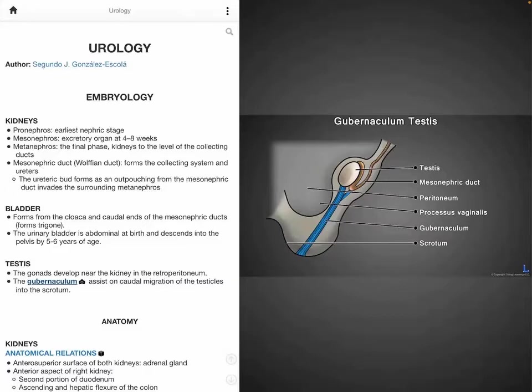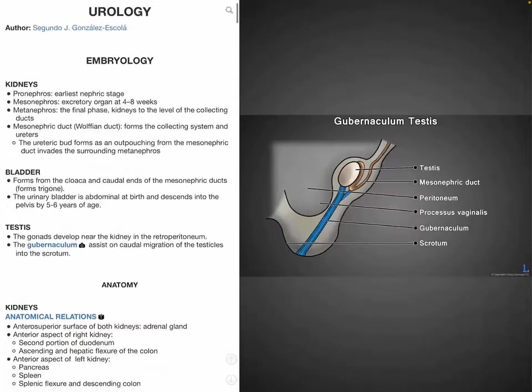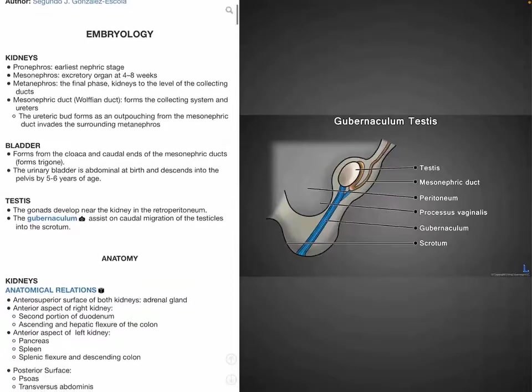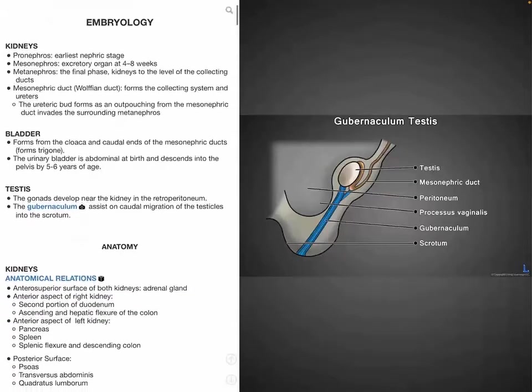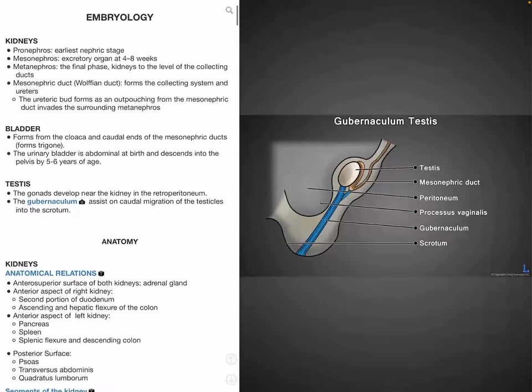The bladder is formed from the caudal end of the mesonephric duct and the cloaca, which is the dilated terminal portion of the developing hindgut. It then descends into the pelvis after birth.